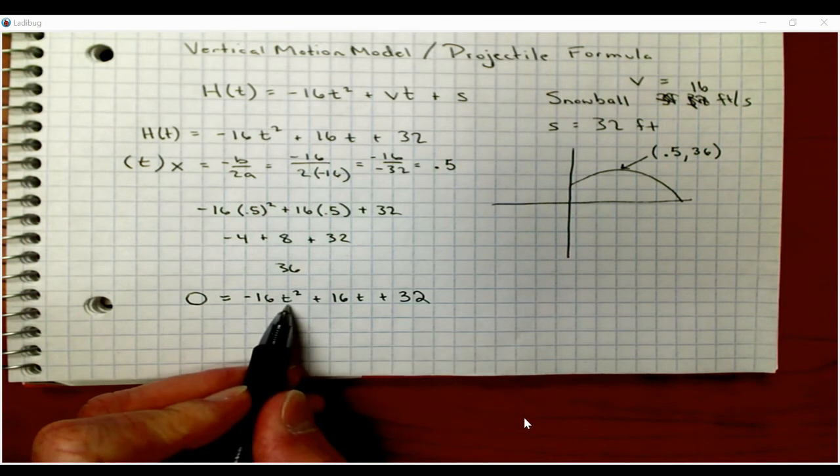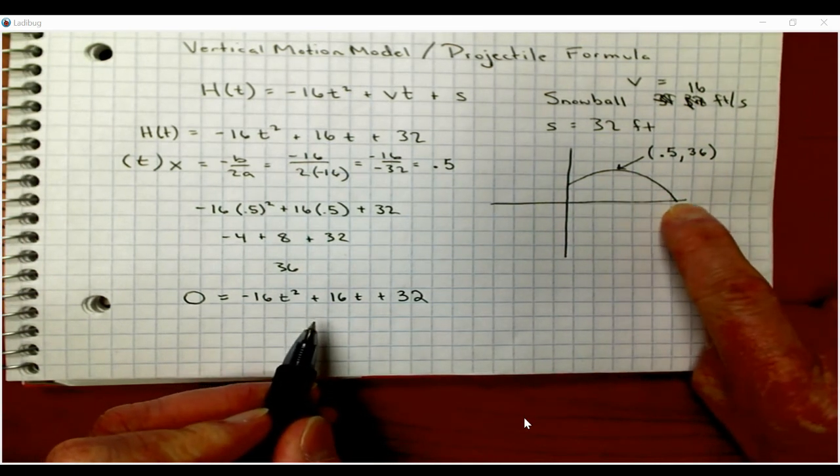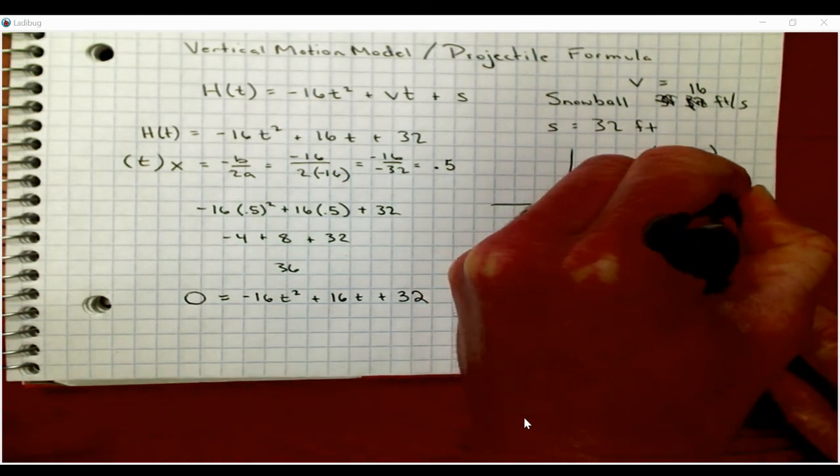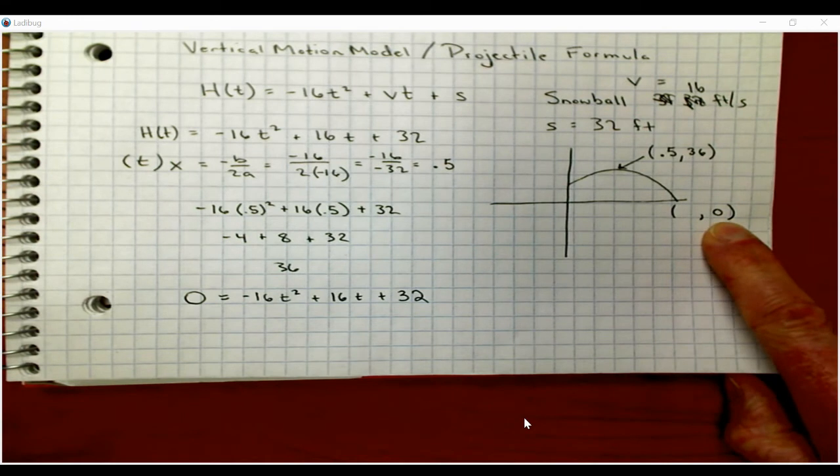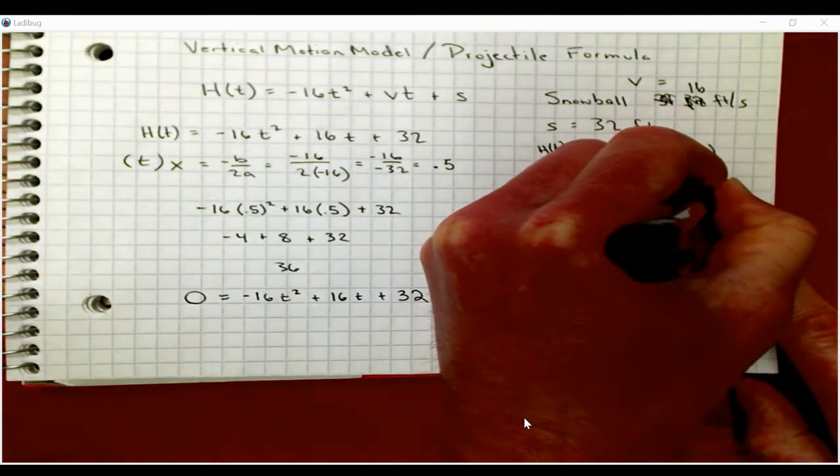And again, we're looking for the time when this snowball finishes its flight and hits the ground. So we know the height is zero. So it's something comma zero, right? Because we're going to have a zero y value or h(t). So this is height with respect to time, and this is time.